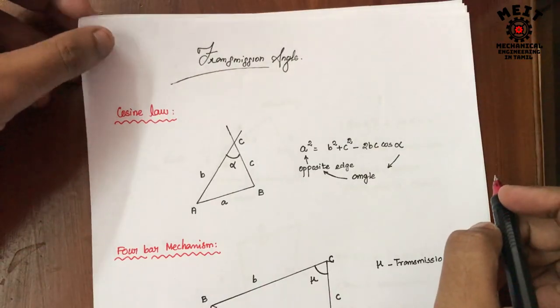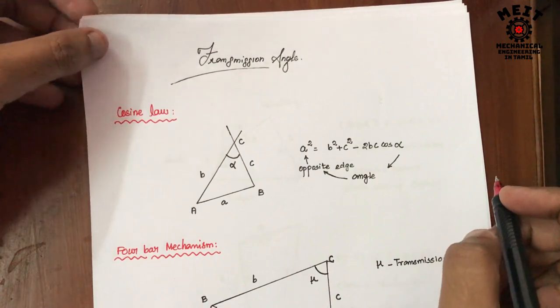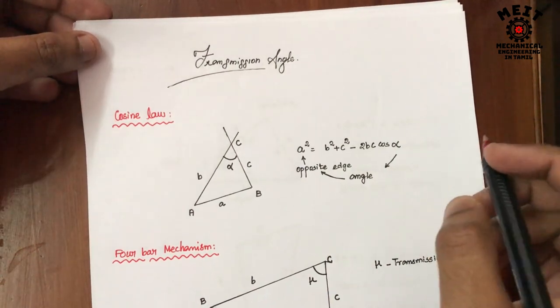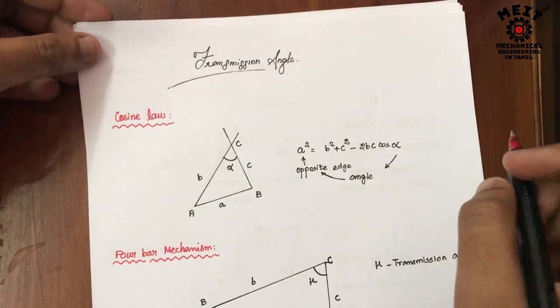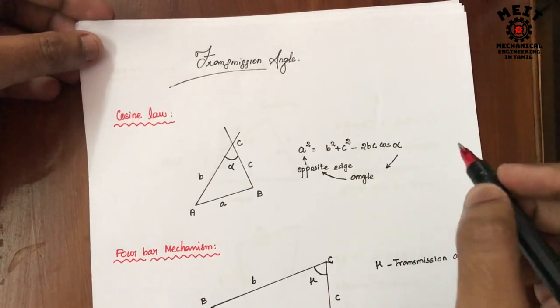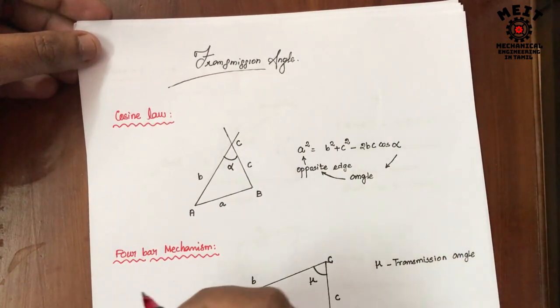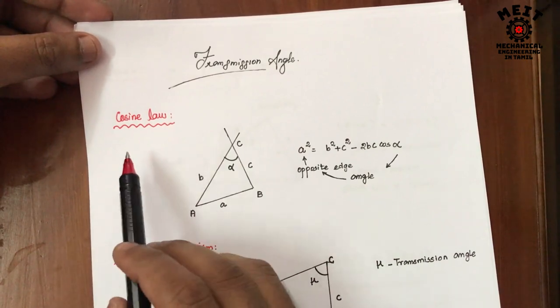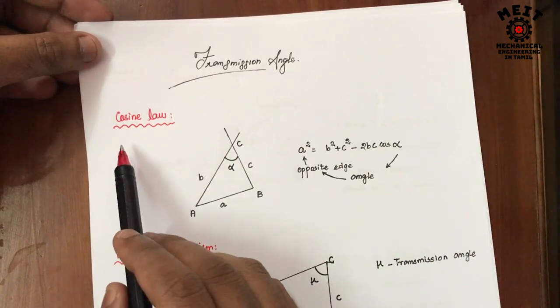Hello, today we are going to see about transmission angle and 4-bar chain mechanism and problem solving in it. Before that, we can see what is cosine law.